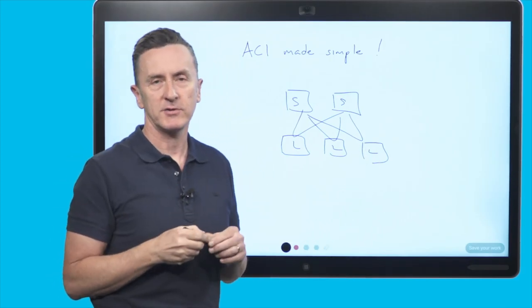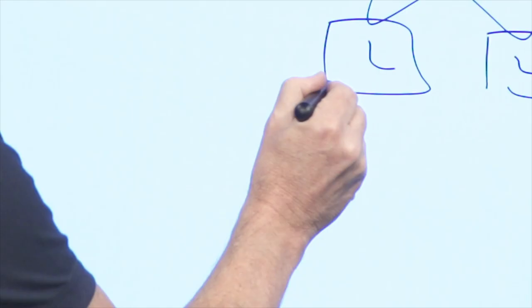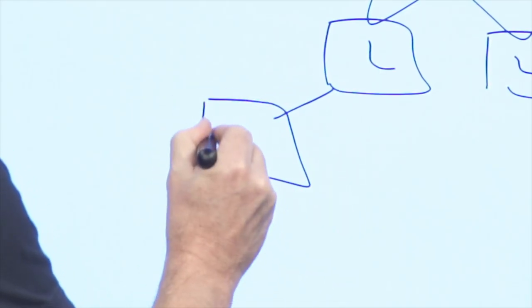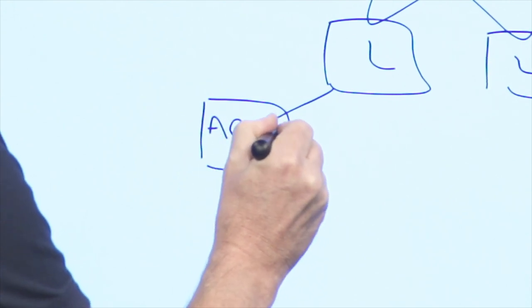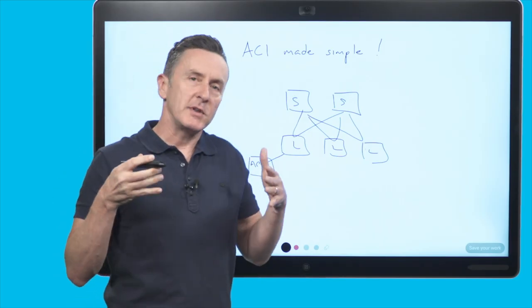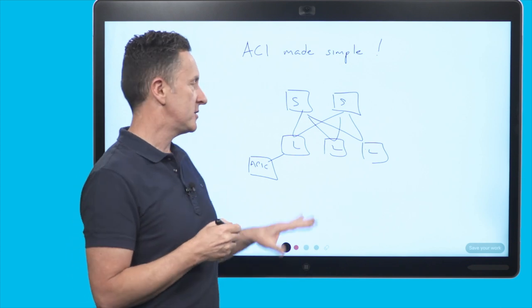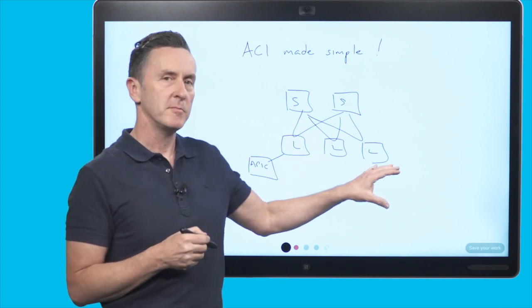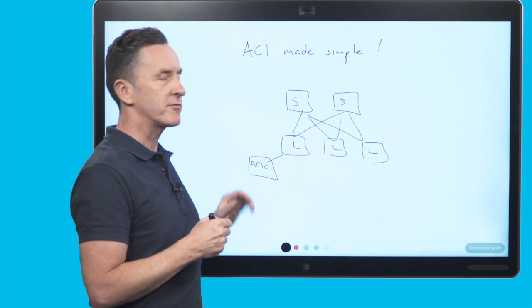That's the way the architecture is constructed and we configure the network through our controller which is known as the APIC. The APIC is the place where you go to actually deliver the configuration into the network. You don't go to the individual switches to configure them. You just configure everything through the APIC.